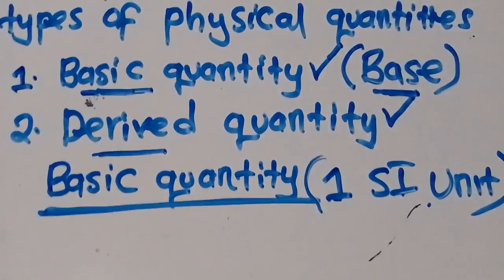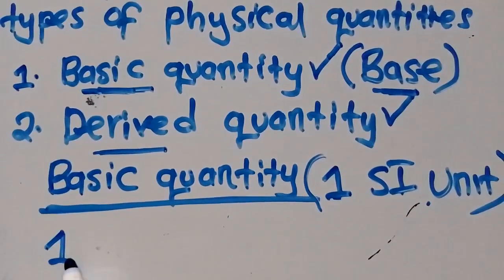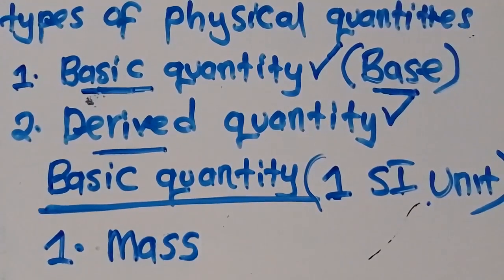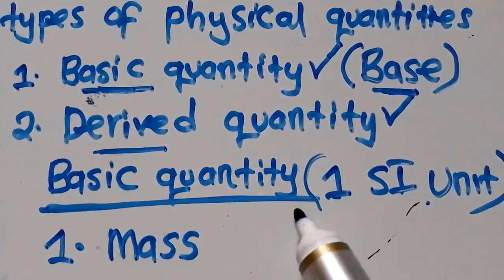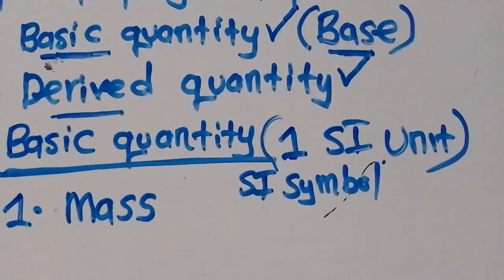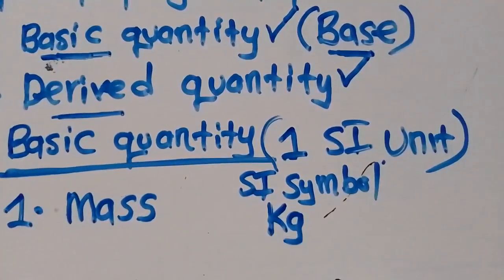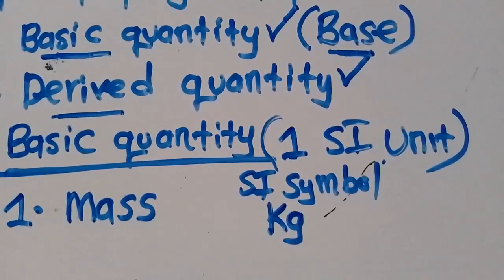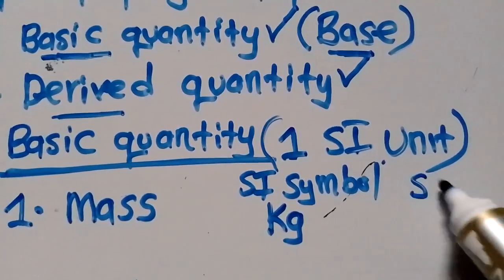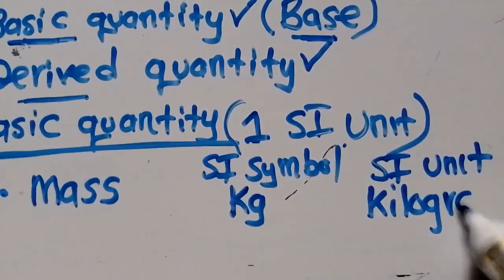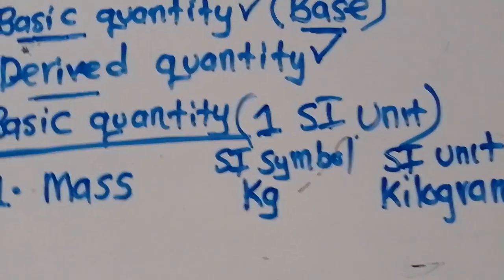The first basic quantity we get to talk about is mass. So mass — the SI symbol is kilograms. This is to show you that mass is measured in kilograms. So whenever a question gives you mass in grams, you need to convert from grams to kilograms. The SI unit is kilograms.